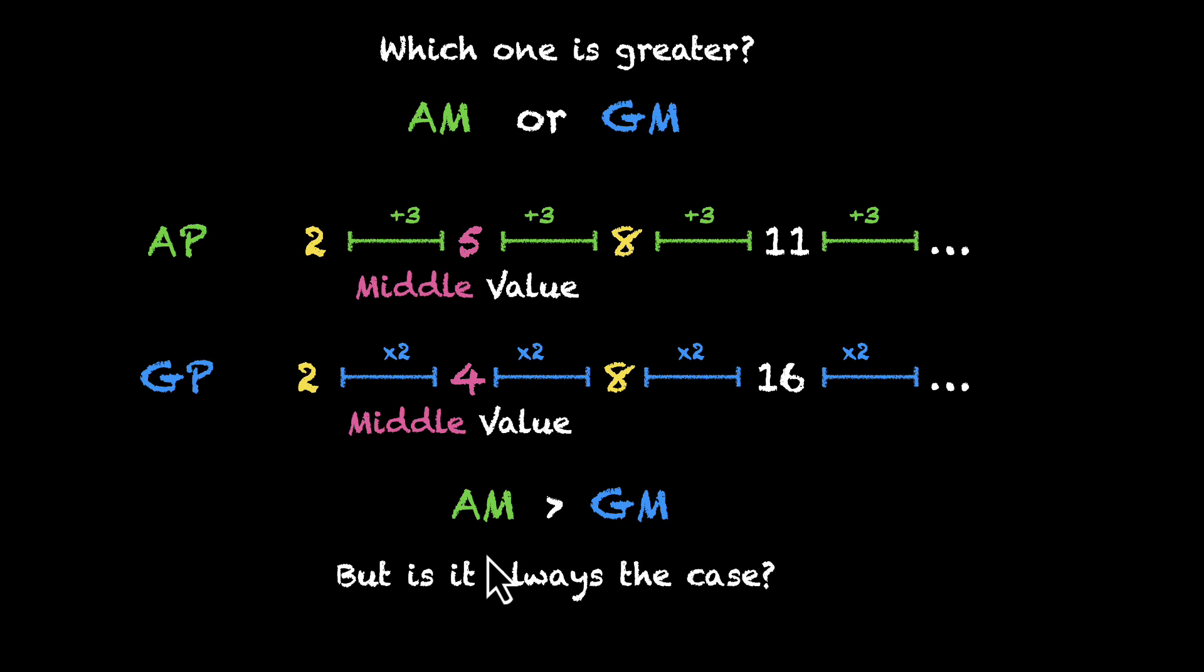Okay, so spoiler alert: arithmetic mean is always greater than geometric mean, and there are cases when both of them are equal as well. But there is no case where geometric mean can be greater than arithmetic mean. Now let's look at the proof.